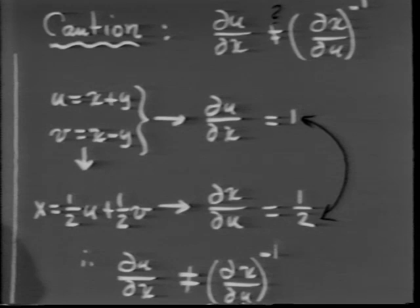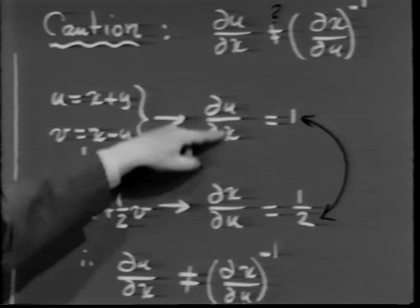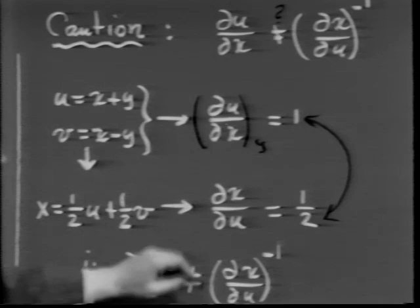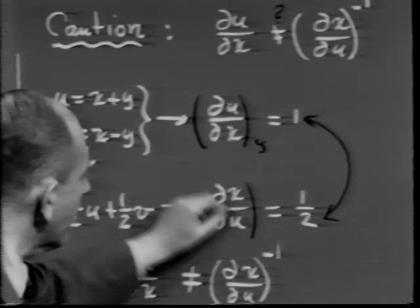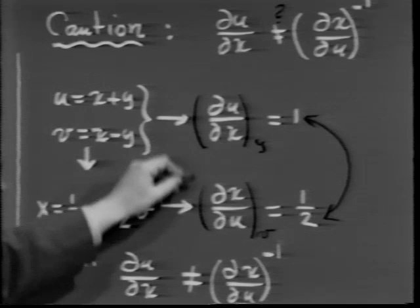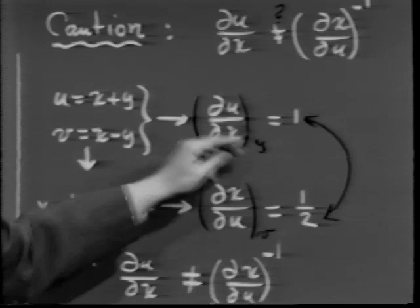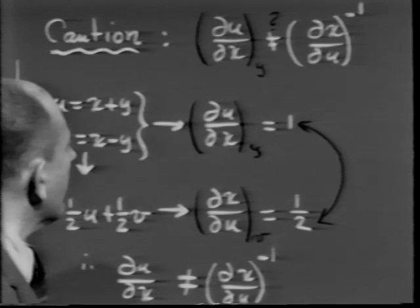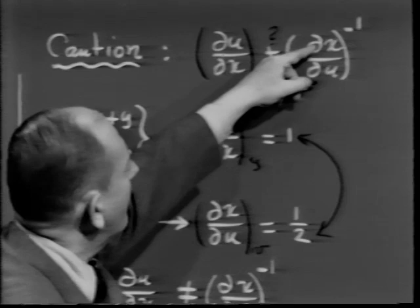The key point: when we said 'partial of u with respect to x,' the independent variables were x and y — y was held constant. When we said 'partial of x with respect to u,' we held v constant. The variables held constant are different. But if instead I take the partial of x with respect to u holding y constant — from u = x + y we get x = u − y — that partial is 1, which is indeed the reciprocal of 1. When the variables held constant match up, the reciprocal relationship works.